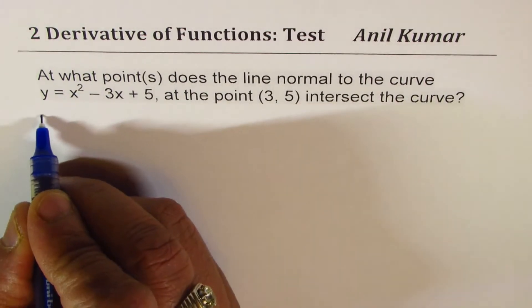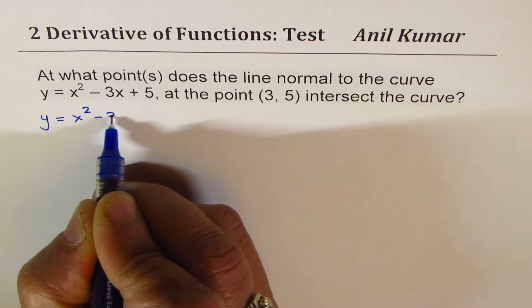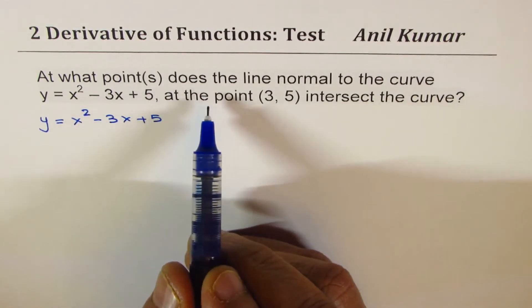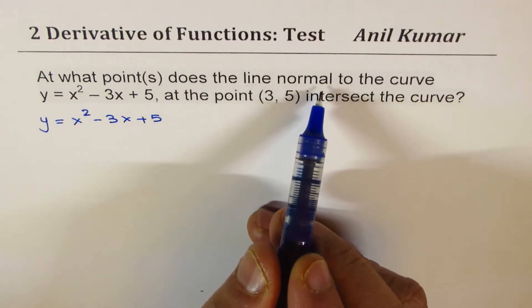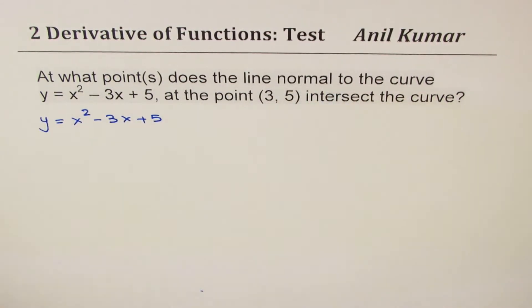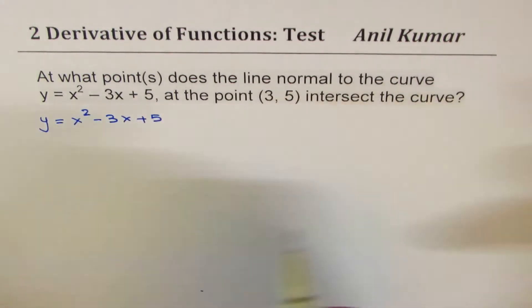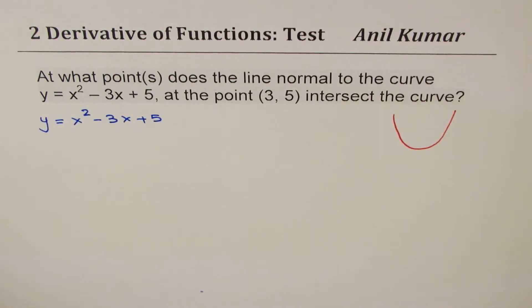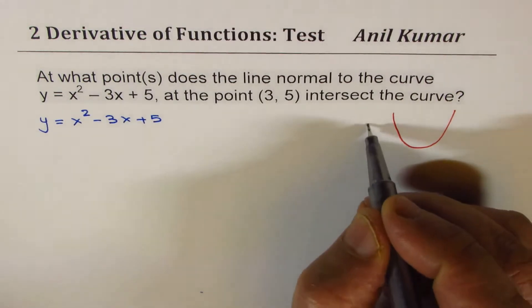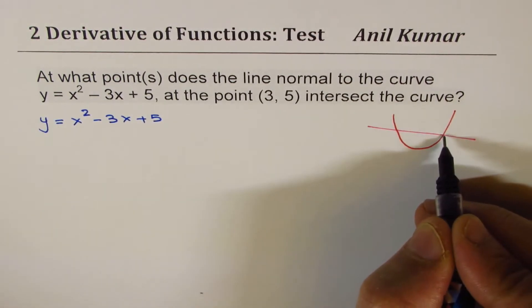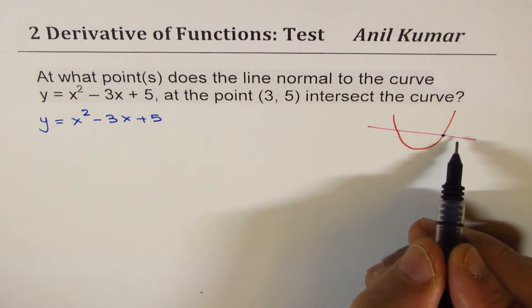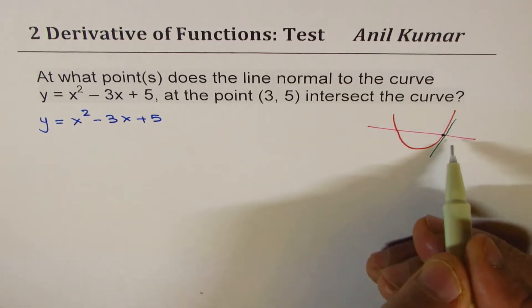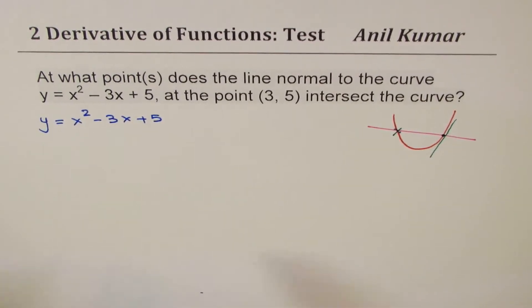The equation of the curve is y = x² - 3x + 5, and we are interested in finding at what point the normal line intersects the curve. It's a parabola. If we have a normal to the curve at point (3, 5), I don't know exactly where the other point will be, but the normal does intersect somewhere else.